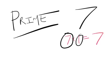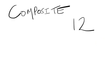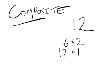Now let's look at composite numbers. Composite numbers are composed of many different factors. For example, the number twelve — you've got six times two, you've got twelve times one just like any prime number, and you've got three times four. There's a whole bunch of factors.